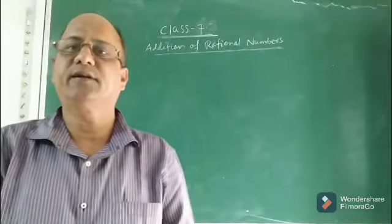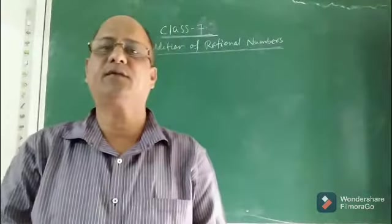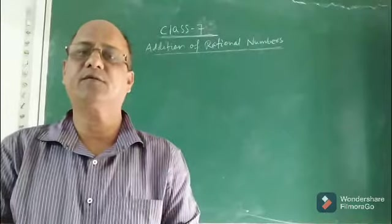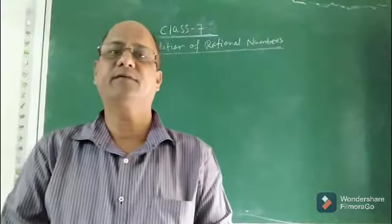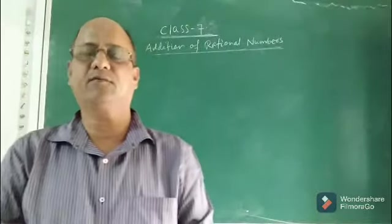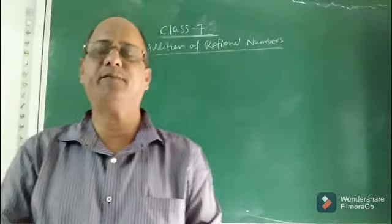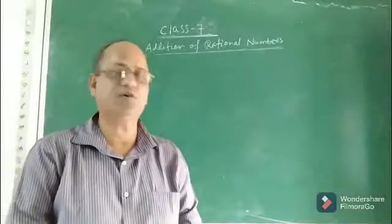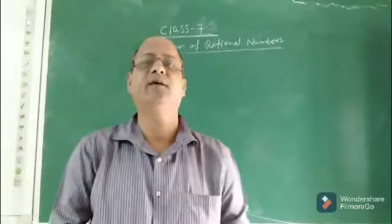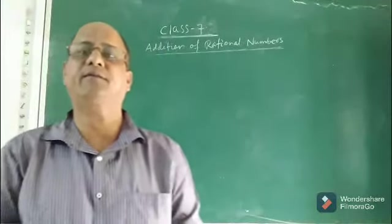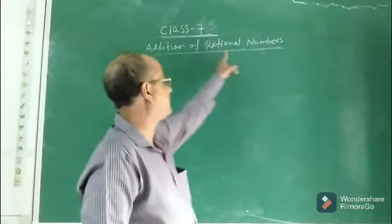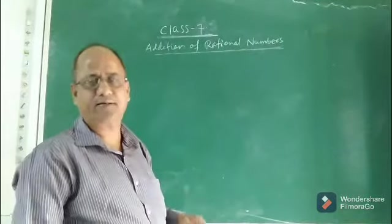Good morning, children. In the previous class we had completed the rational number chapter. Today, let us discuss different operations on rational numbers. Operations means addition, subtraction, multiplication and division. We will see how rational numbers are added, subtracted, multiplied and divided. Today we will discuss addition of rational numbers and the properties of rational number addition.